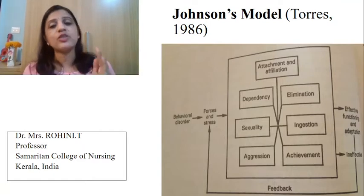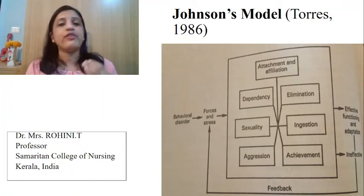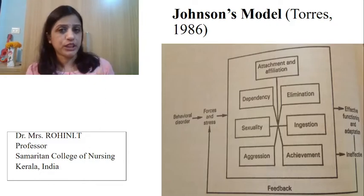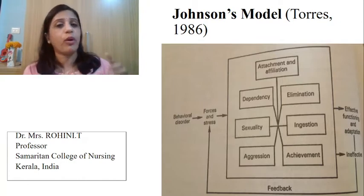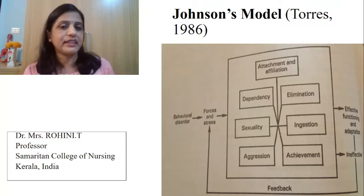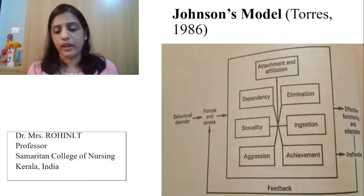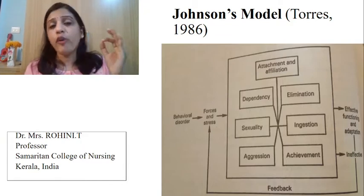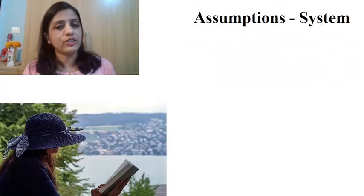Now let us study what are the assumptions and propositions. As postgraduate students, for exams there may be questions asking you to discuss assumptions or propositions of a model. Johnson's model has specifically given four assumptions related to the behavioral system and also certain propositions. Johnson divided assumptions into three sets: assumptions about the system, assumptions about the structure, and assumptions about the functional requirement.